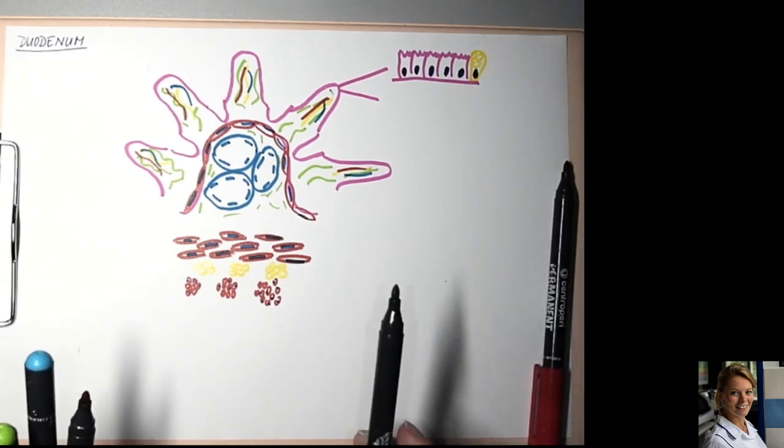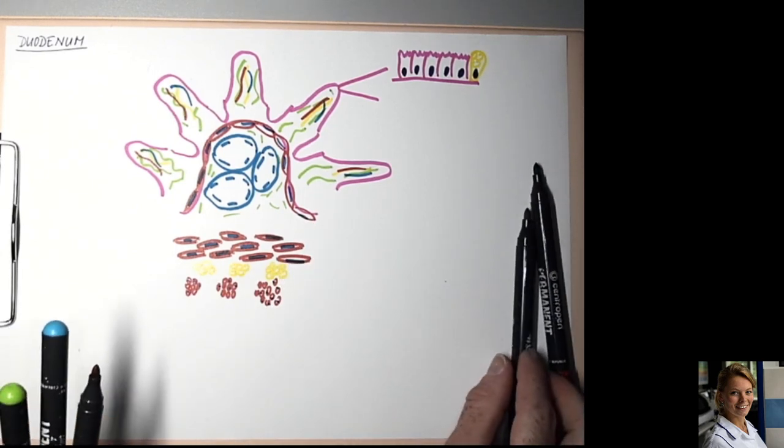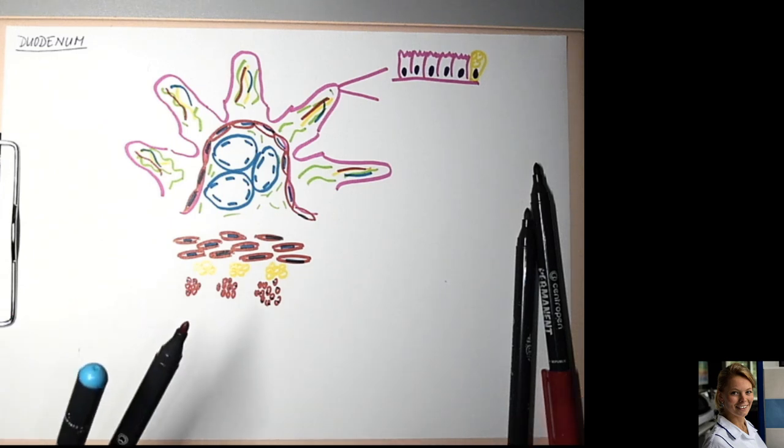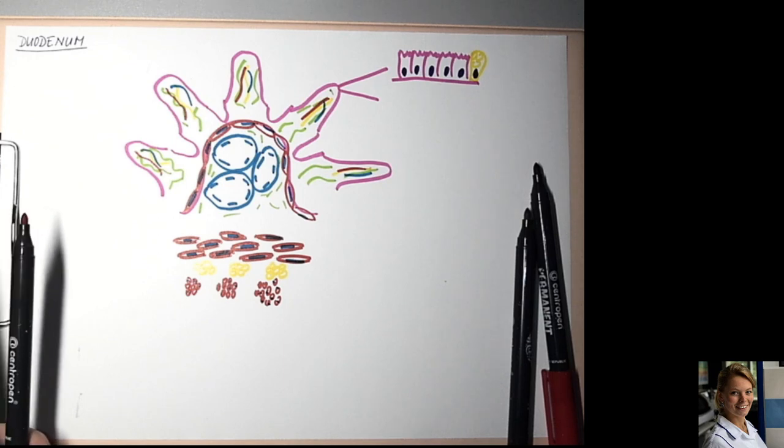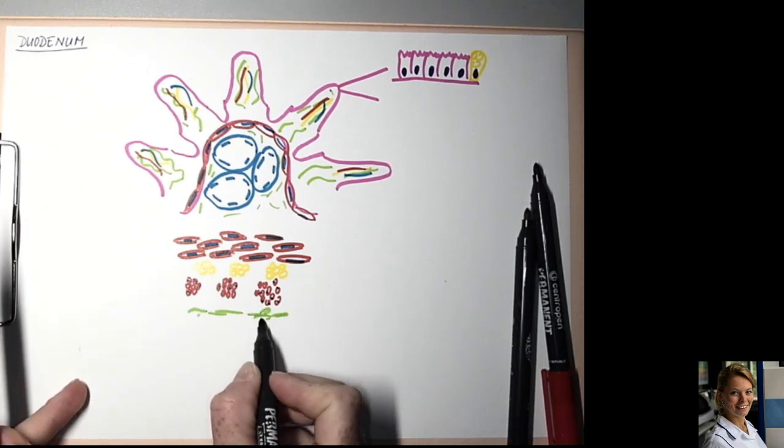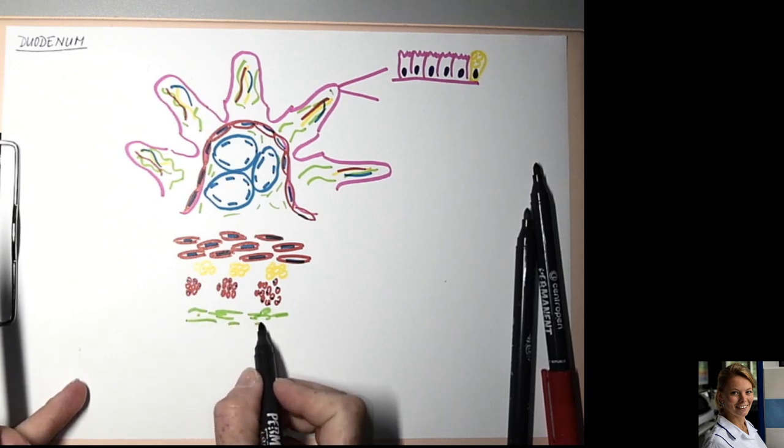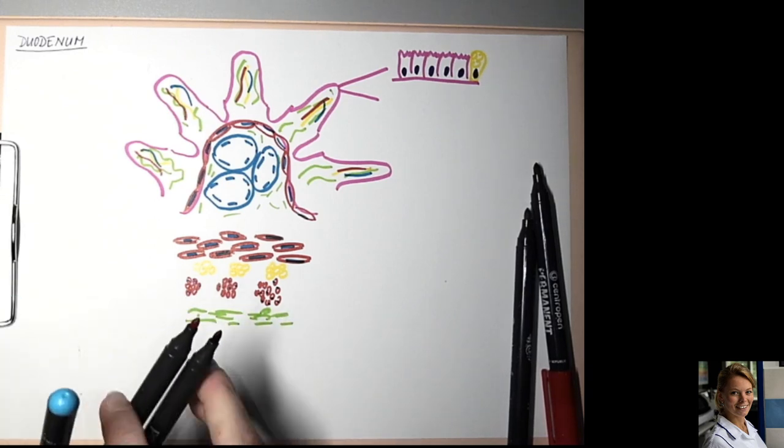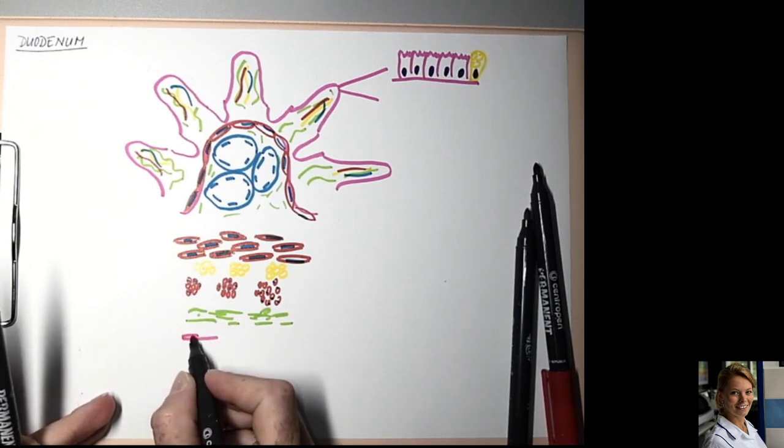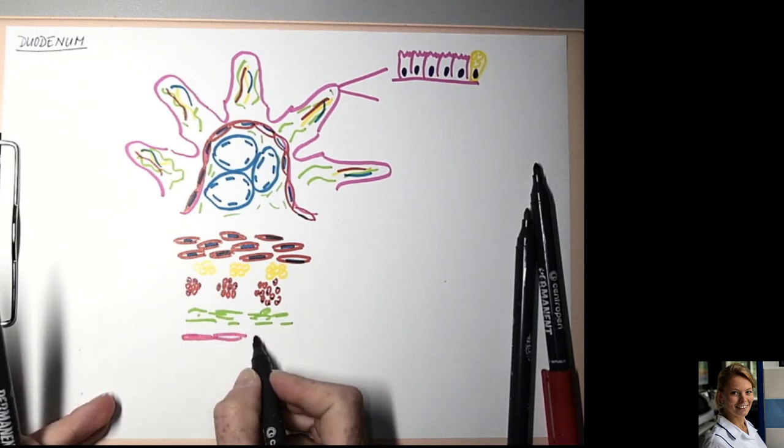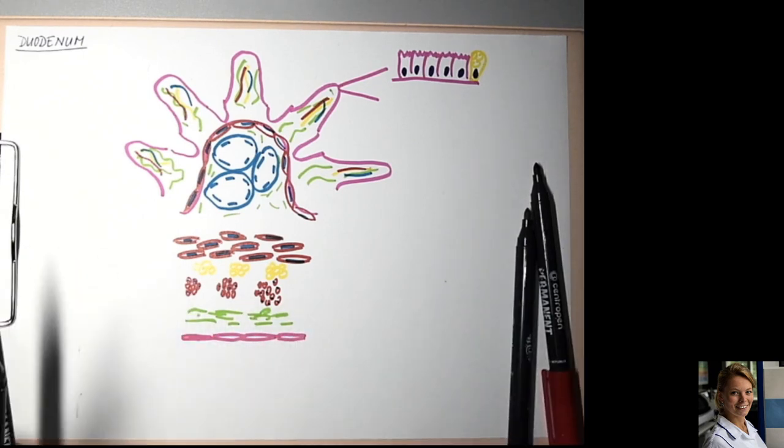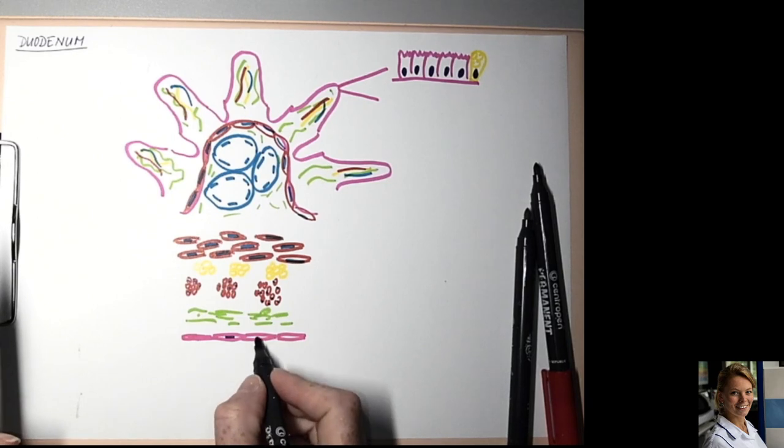The last layer of duodenum is serosa, a thin layer of loose connective tissue covered by mesothelium. Mesothelium is a single layer of flattened squamous cells with flattened nuclei.